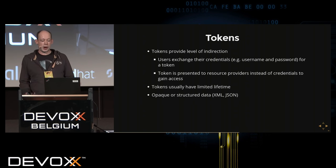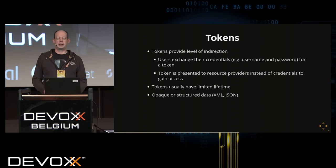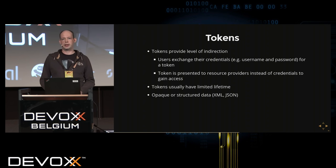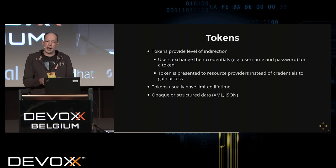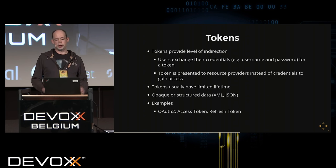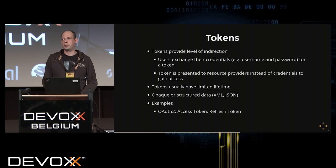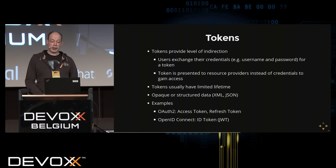A token can be an opaque string with no inherent meaning that you must resolve somewhere, or it can be structured data — such as an XML document like a SAML assertion, or a JSON format that is base64-encoded for easy transmission but contains actual information inside. Examples include the access token and refresh token familiar from OAuth 2, or an OpenID Connect ID token using a JWT.